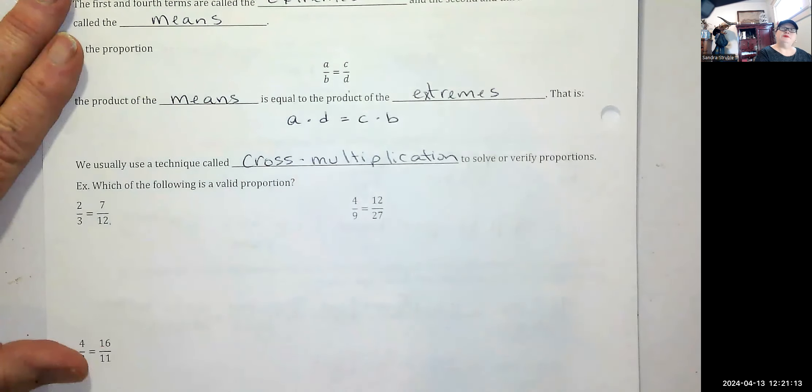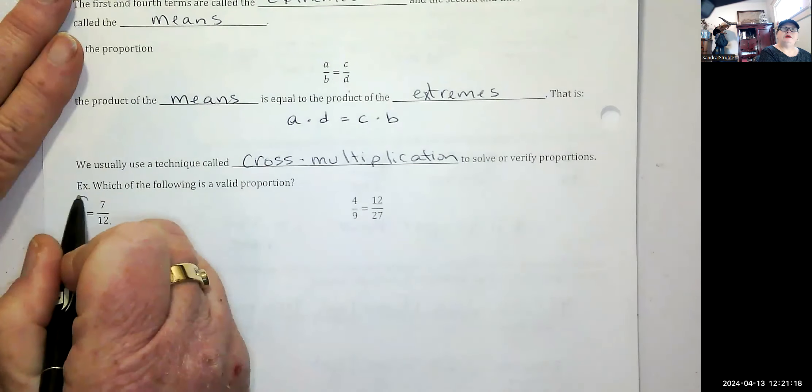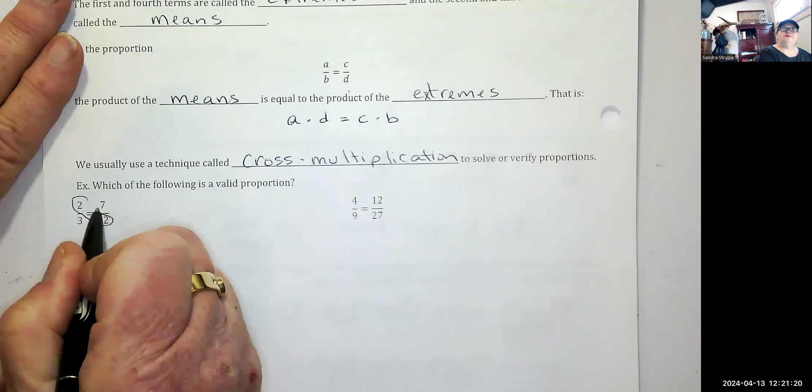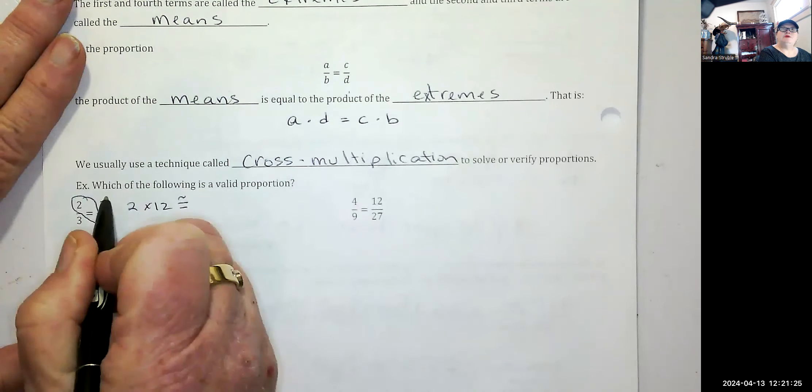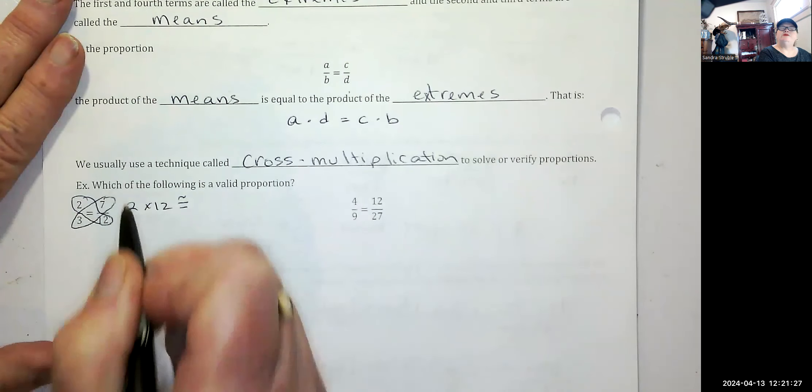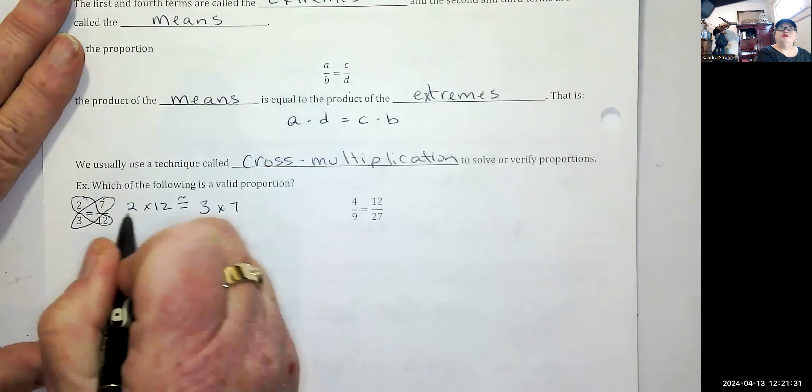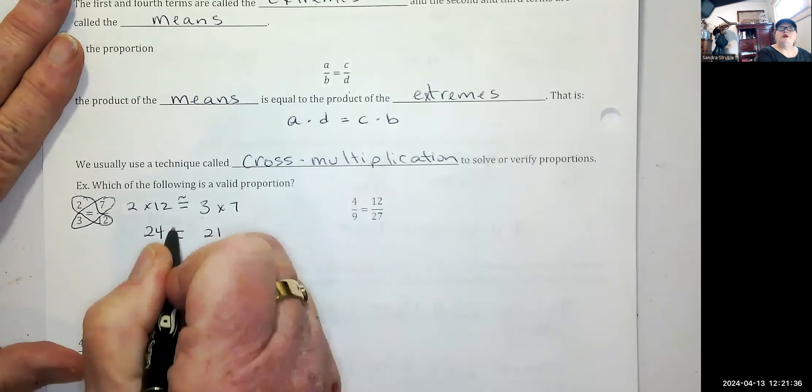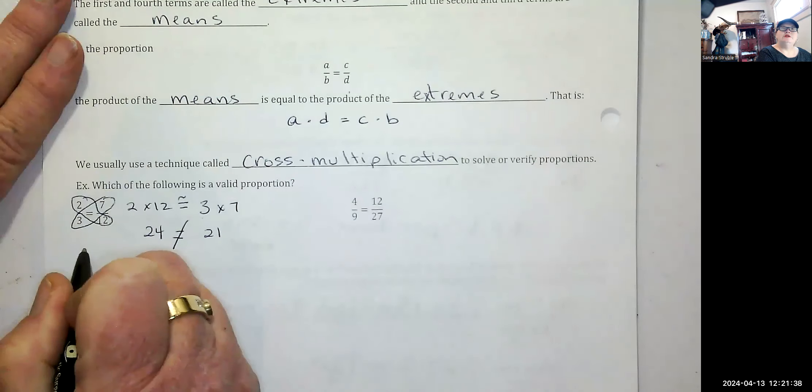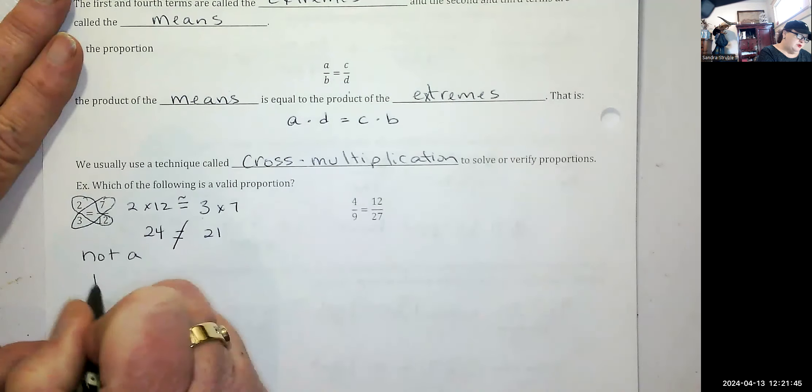If the two equal each other, then it's a proportion. So I'm going to go two times 12 should be equal to three times seven. Two times 12 is 24. Is that equal to three times seven? 21, no. So two to three, two thirds is not a proportion to seven to 12. It's not a proportion.